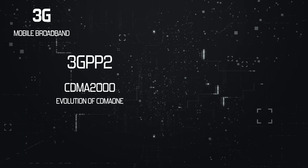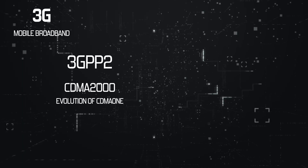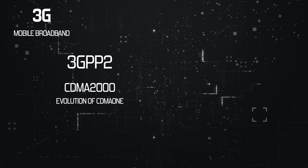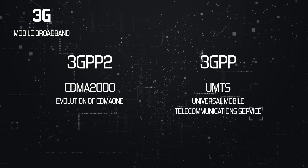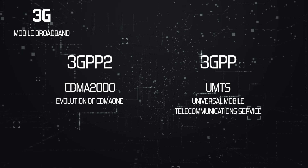Much like 2G, 3G actually had two dominant variations. In North America and South Korea, 3G followed on from CDMA-1 with CDMA-2000, defined by the 3GPP2. Everywhere else, the 3GPP defined Universal Mobile Telecommunication Service based on Wideband CDMA. Both systems met the ITU's requirements of true 3G systems.